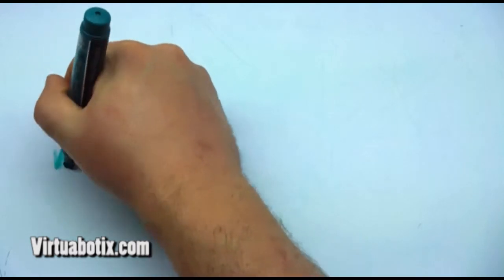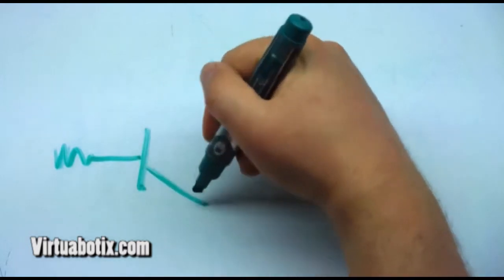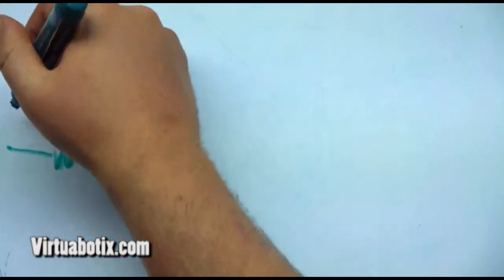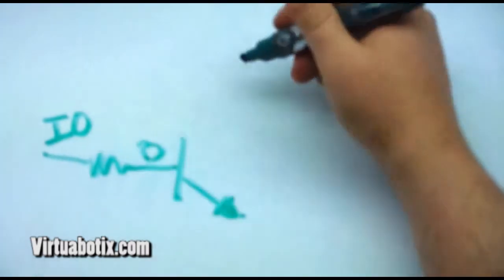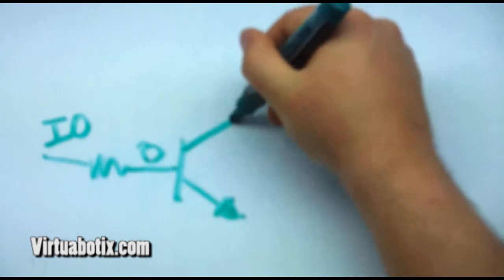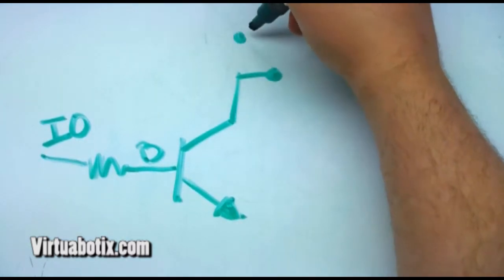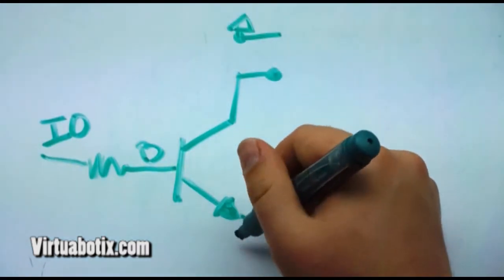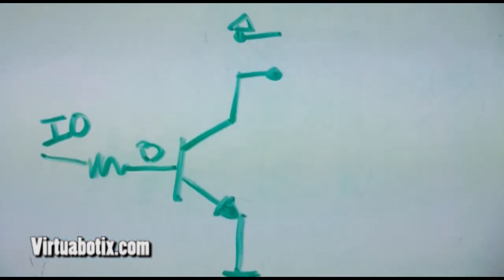So basically what we have here is first let's do a resistor, take it in. This is our base. This is our I/O. And this is our ground.